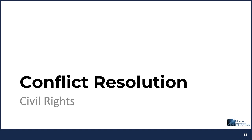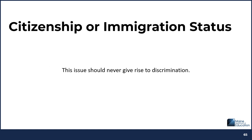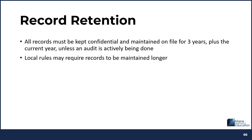The next topic is conflict resolution. It is possible to avoid a potential civil rights complaint with conflict resolution techniques: remain calm and ask about the situation, repeat it back to ensure you understand, try to help those involved work out their differences, and get help from authority figures if threats or violence is possible. Citizenship or immigration status should never give rise to discrimination. All records must be kept confidential and maintained on file for three years plus the current year unless an audit is actively being done. Local rules may require records to be maintained longer.